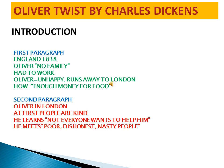Today I am going to teach you the introduction of Oliver Twist by Charles Dickens. So here are some phrases I have taken out from your book. First paragraph, as you can see on your page: England 1838 — it is about England in 1838 when Oliver was a young boy. He had no family, so he had to work with other people and survive. Oliver was very unhappy and he runs away to London. Then he did not have enough money for food there.